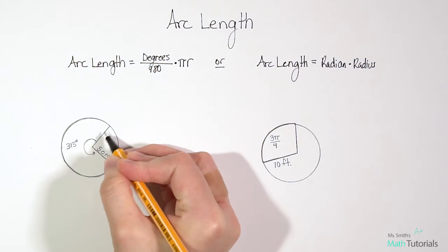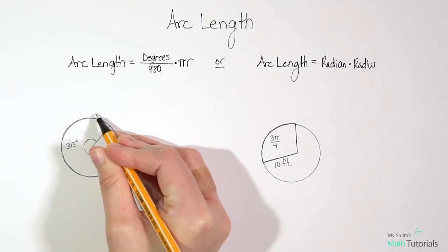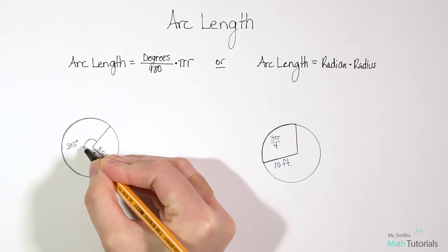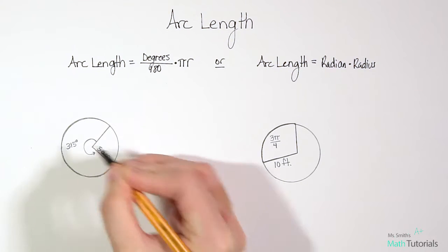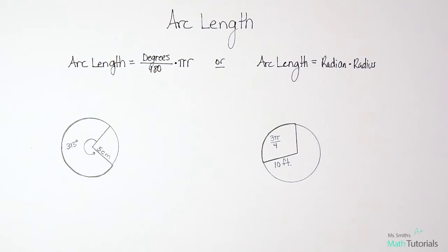In this case we're looking for the arc length from here to here. They've shown us by letting us know that from here to here is 315 degrees.